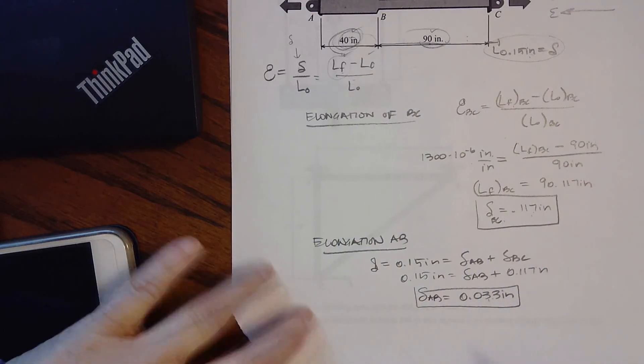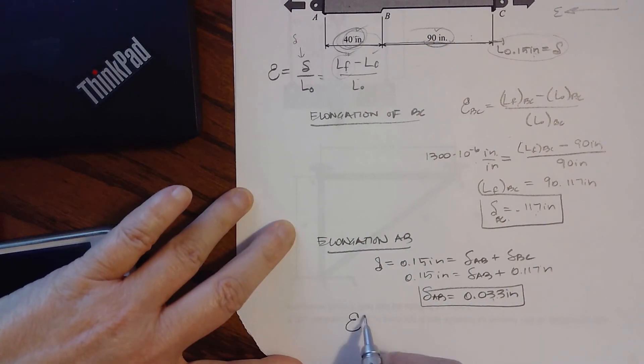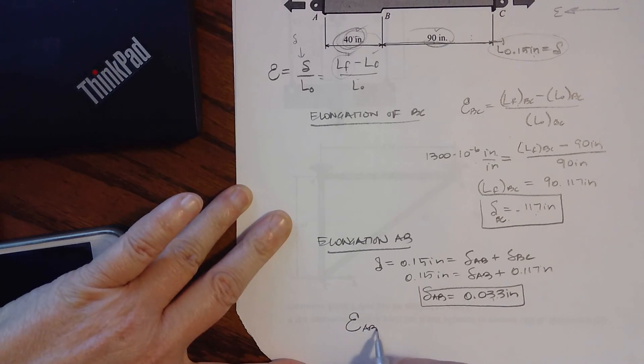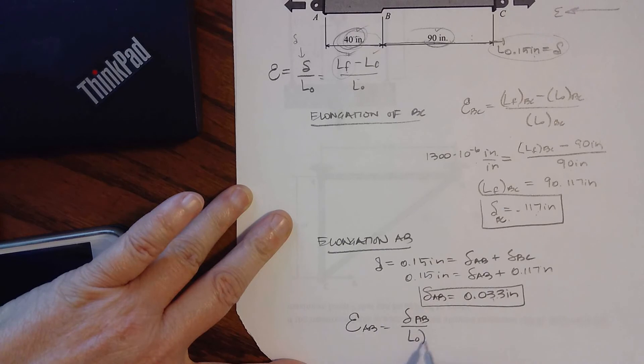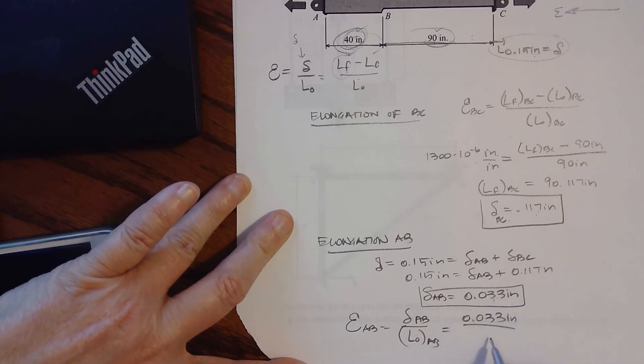So now if we want to know the strain from A to B, that's going to be the change in length from A to B divided by the initial length from A to B, equals 0.033 inches divided by 40 inches.